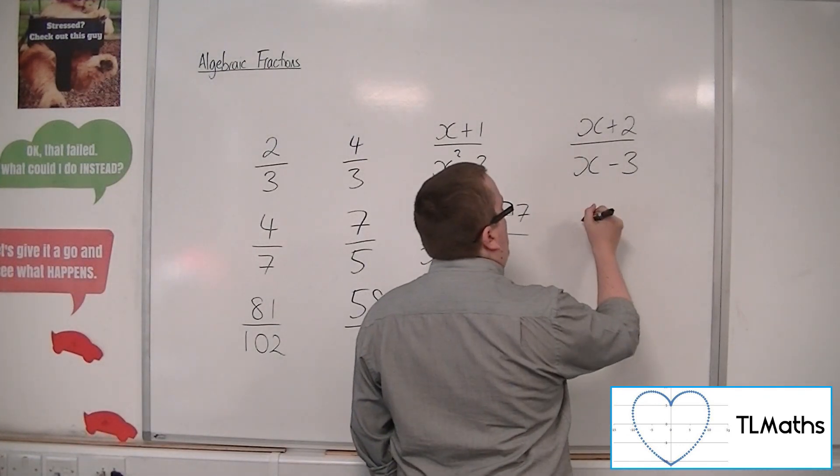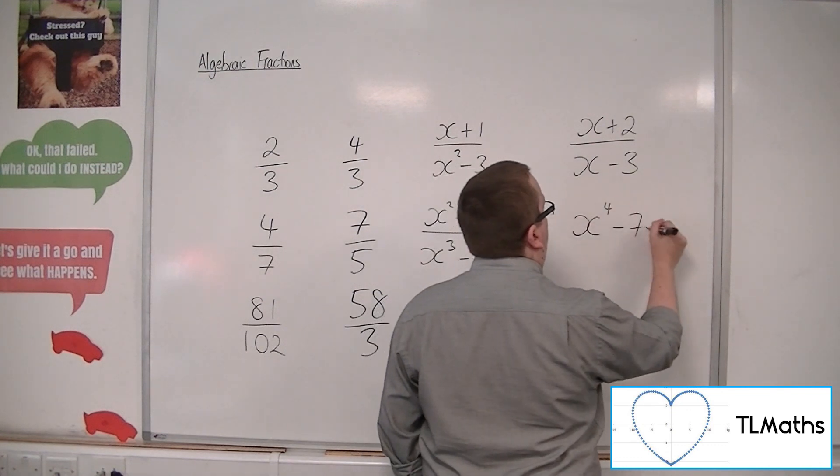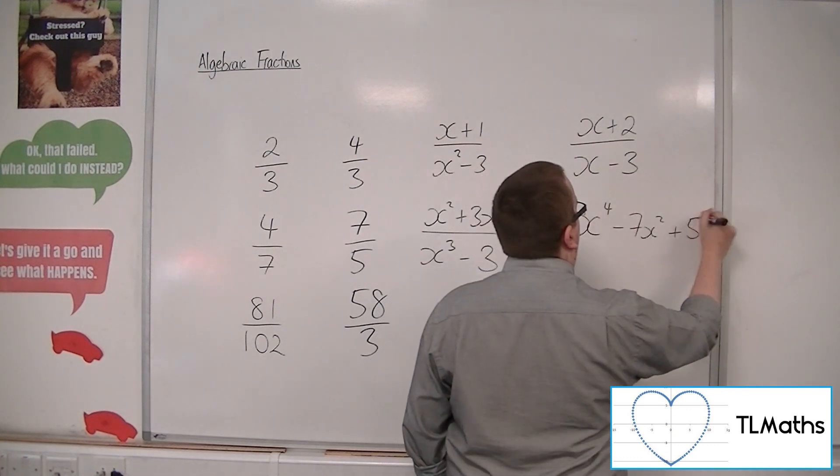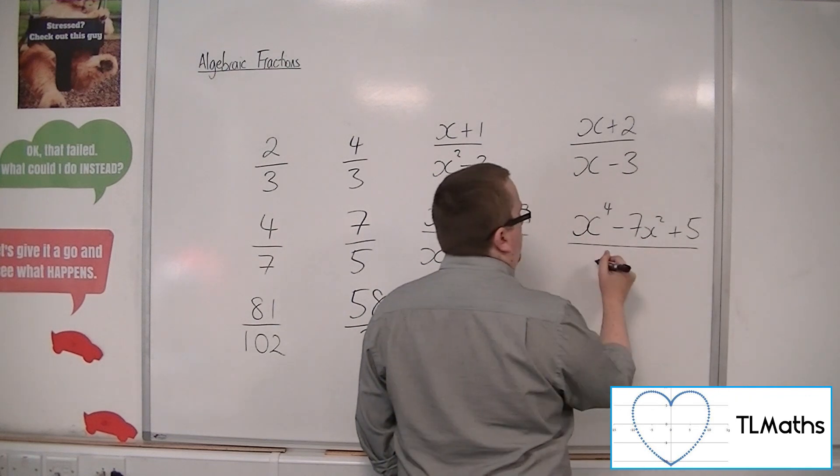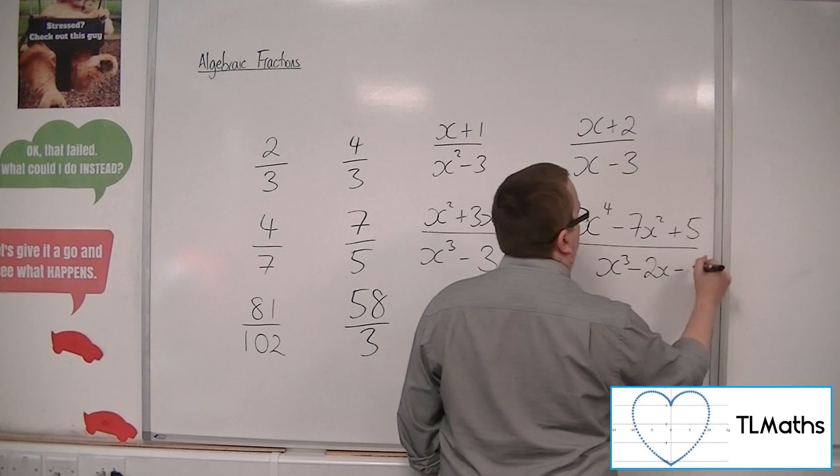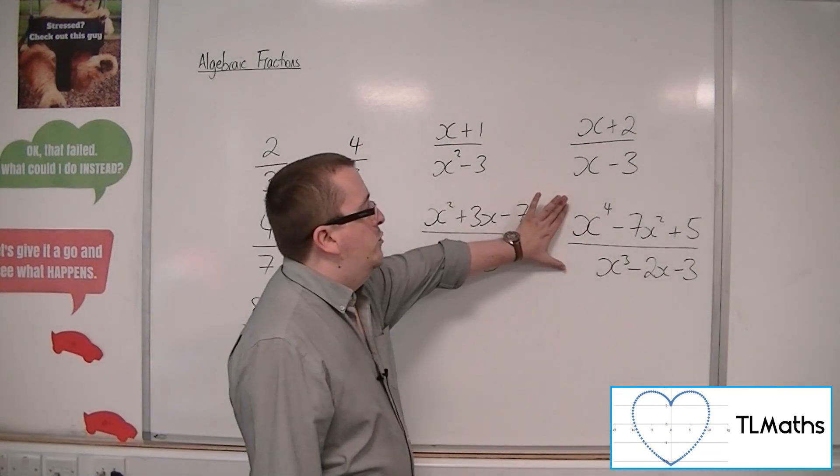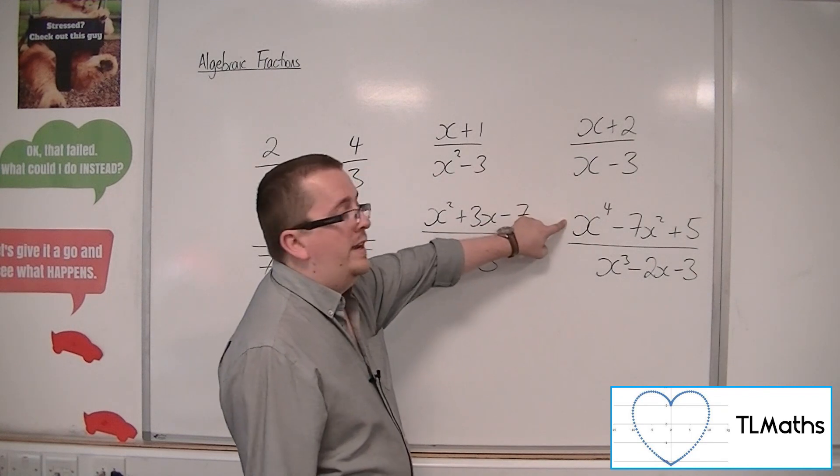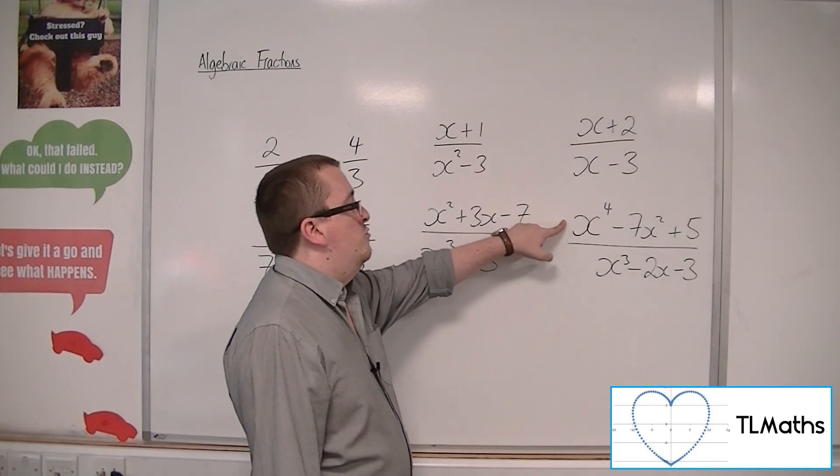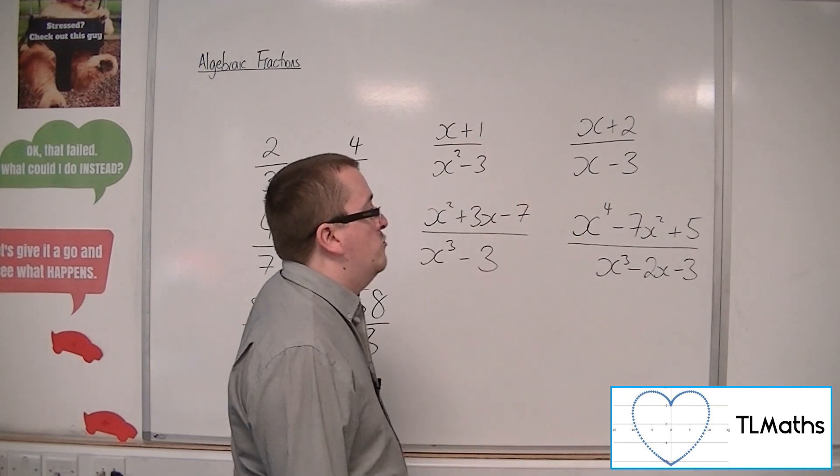Likewise, an improper fraction would be something like (x⁴ - 7x² + 5) over (x³ - 2x - 3). This is an improper fraction because the largest power of x is 4 in the numerator and 3 in the denominator, so the larger one is in the numerator.